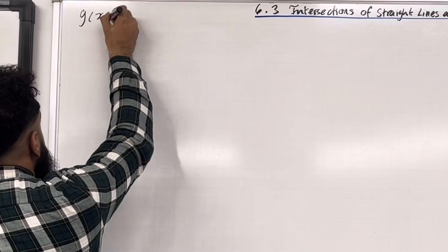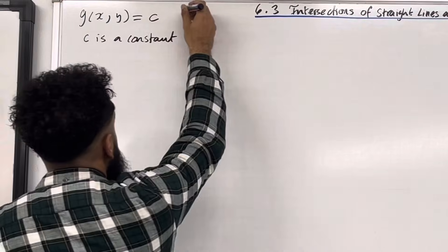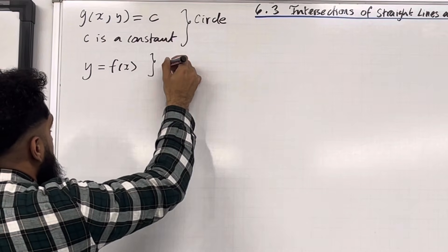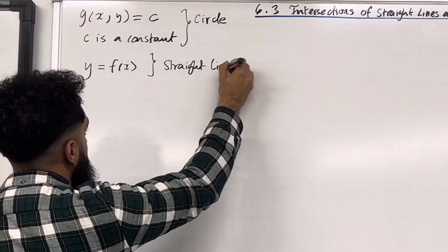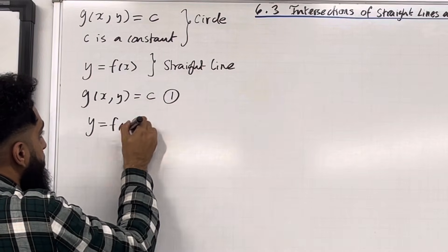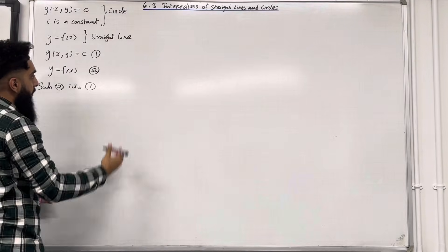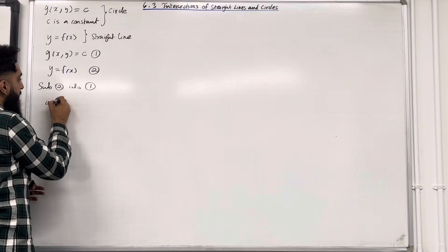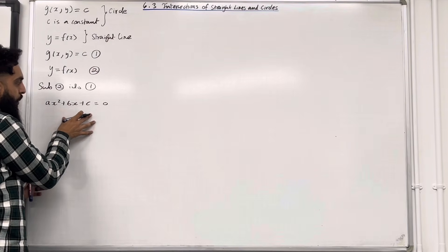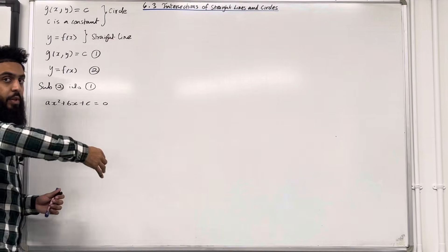Suppose G of x and y equals C, where C is a constant, represents a circle. And suppose y equals F of x represents a straight line. Calling these equation 1 and equation 2, if I substitute equation 2 into equation 1 and rearrange, taking everything to the left-hand side, I get an equation of the form Ax squared plus Bx plus C equals 0, where A, B, and C are constants. This equation could have no solutions, two solutions, or one solution — all dependent on the discriminant of the quadratic.